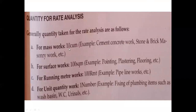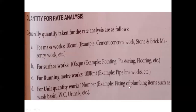For mass works — 10 cubic meters is considered. For cement concrete, stone masonry, or brick masonry work, we consider 10 cubic meters, calculate, then divide total cost by 10. For surface works like pointing, plastering, and flooring, we consider 100 square meters and divide total cost by 100. For running meter, such as pipeline works, we consider 100 running meters. For unit quantities like fixing plumbing items such as wash basins, we do it directly for one number.